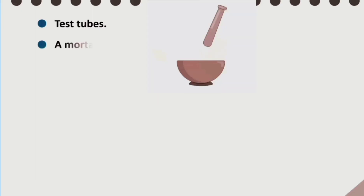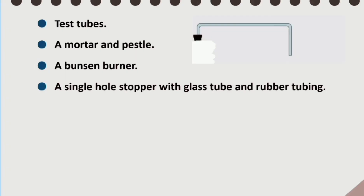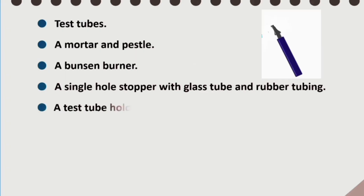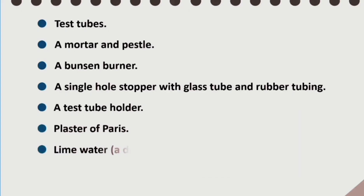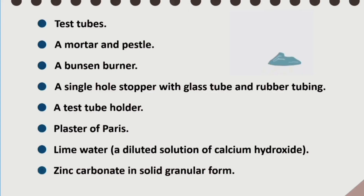For this practical, we will use these apparatus: test tubes, mortar and pestle, a Bunsen burner, single hole stopper with glass tube and rubber tubing, a test tube holder, plaster of Paris, lime water which is a diluted solution of calcium hydroxide, and zinc carbonate in solid granular form.